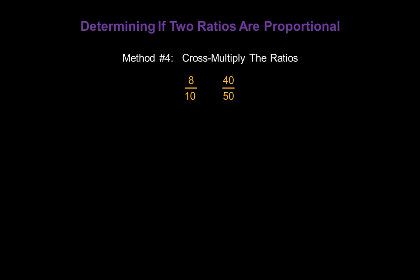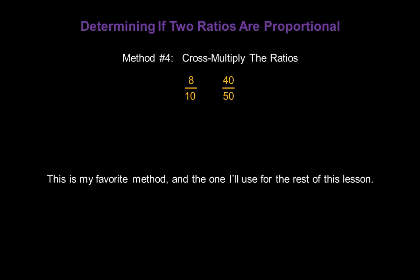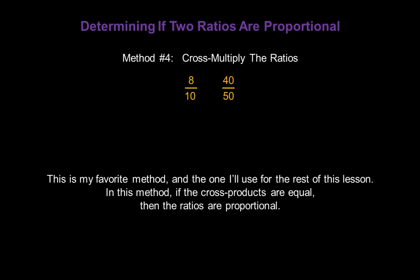Method number 4: we can cross multiply the ratios and compare the products. This is my favorite method, and it's the one we'll use for the rest of this lesson. In this method, if the cross products are equal, then the ratios are proportional.